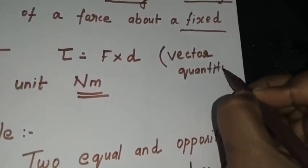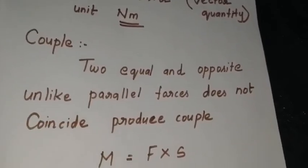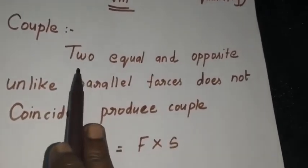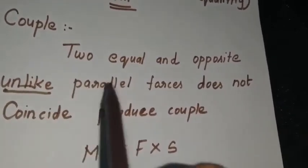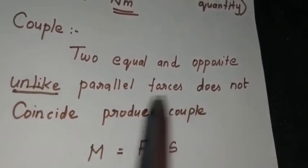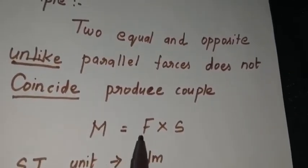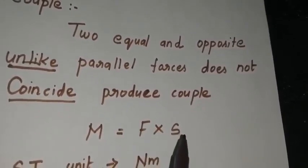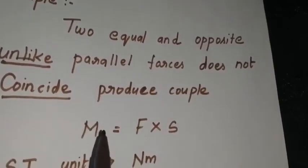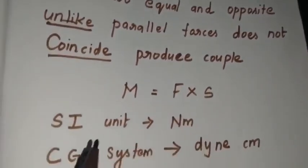Torque is a vector quantity because it has both magnitude and direction. We also saw about the couple. A couple is nothing but two equal and opposite unlike parallel forces that do not coincide. The moment of couple: M is equal to force into perpendicular distance, where M is the symbol for moment of couple.